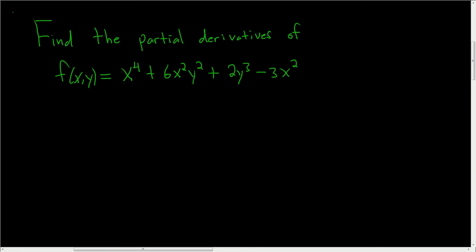Find the partial derivatives of the given function. So this is a function of two variables. Let's go ahead and find the first partial derivative with respect to x. When we do this, we treat all of the y terms as constant.